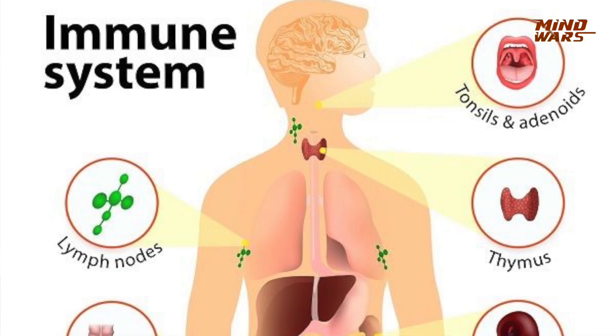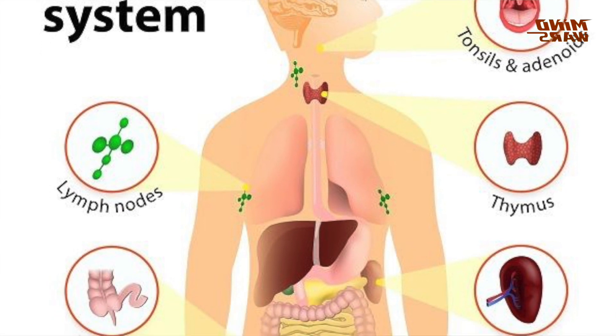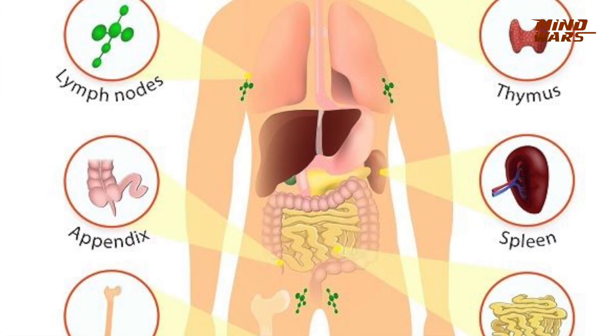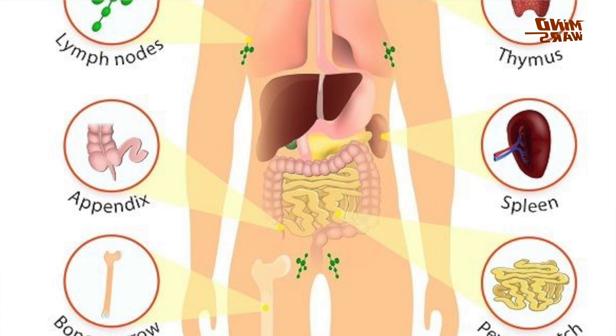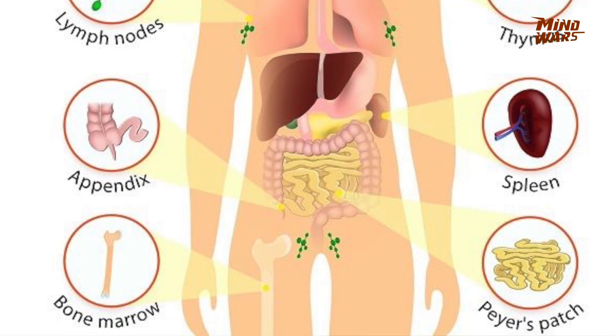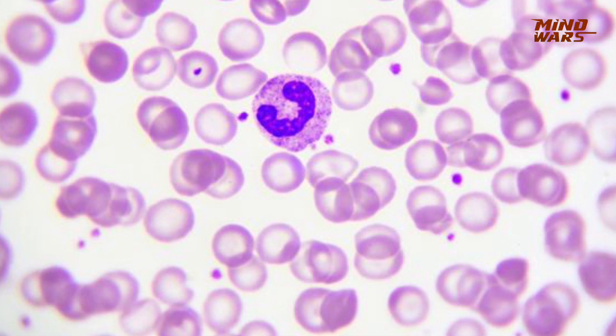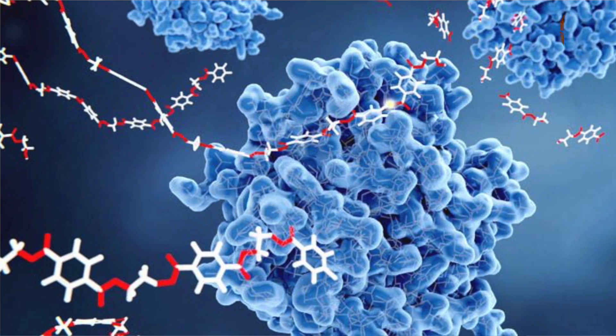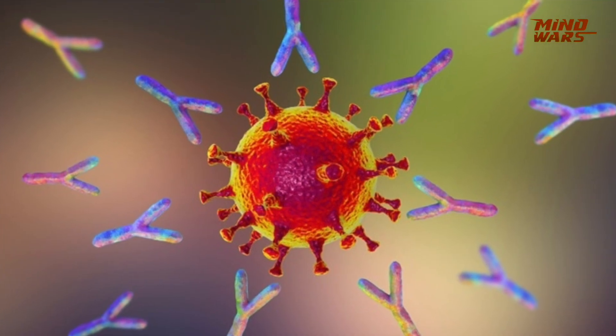The immune system is a series of defense mechanisms in our body that work 24-7 to help protect our body from the attack of pathogens. The immune system is made up of specialized cells called white blood cells (WBCs) and proteins that are enzymes and antibodies. Let me take you through the different lines of defense in our body.